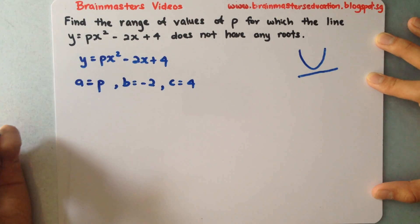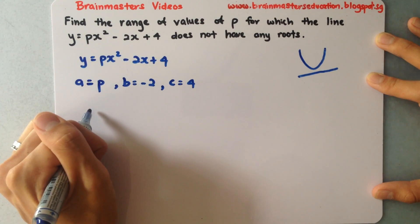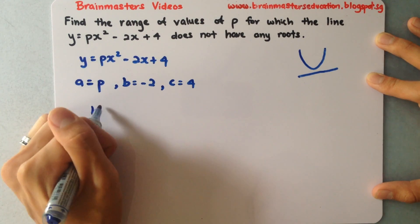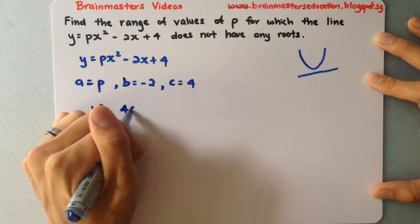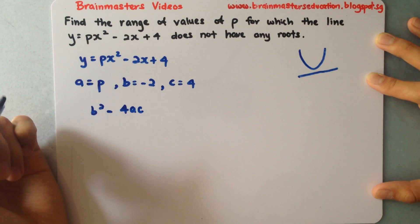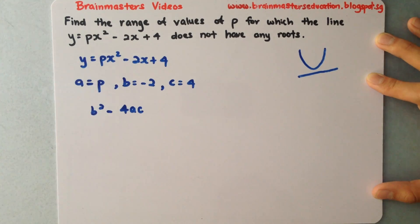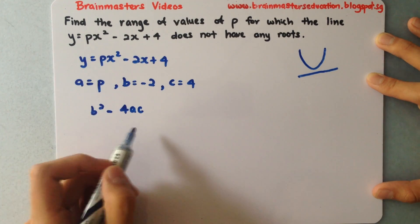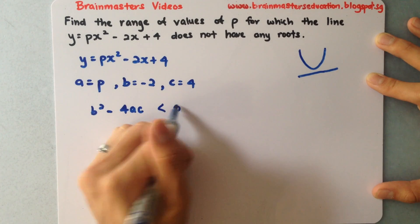I need to identify these because I'll substitute them into b squared minus 4ac. Since the equation does not have any roots, if you refer to the previous video, you'll know that this discriminant is less than 0.